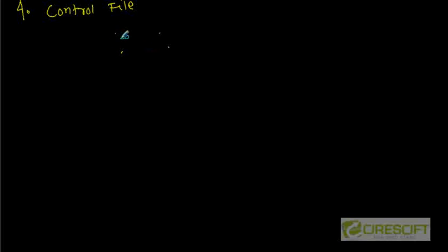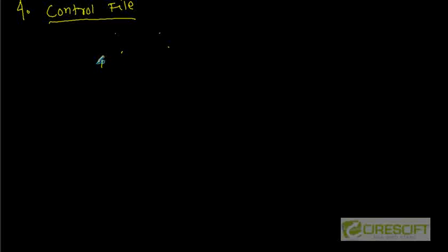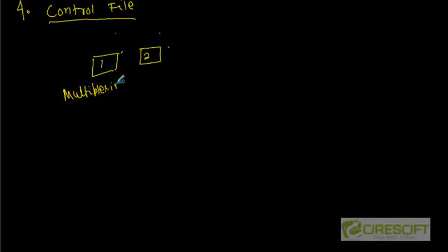The instance reads the control file to find where those data files are and then opens them so we can add data into them. This is one of the most important files, so we want to protect it — instead of storing just one copy, we store multiple copies, perhaps four copies of the control file. In case control file one is destroyed due to a disk failure, we can revert to the duplicate. This is called multiplexing of the control file.